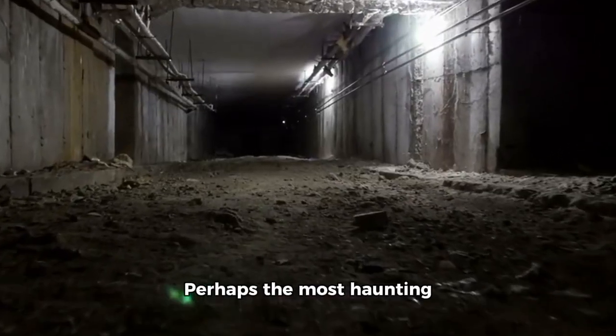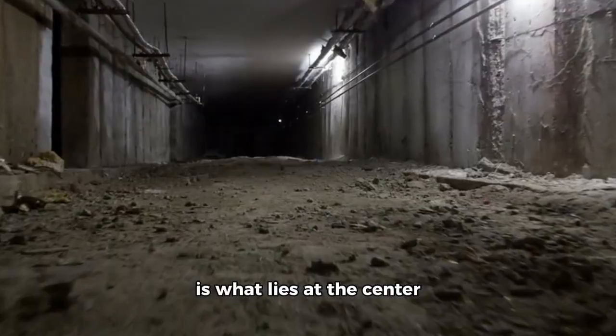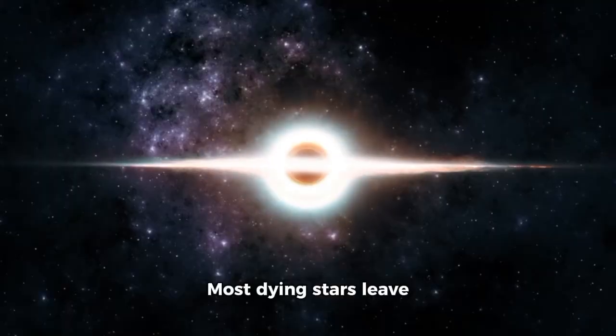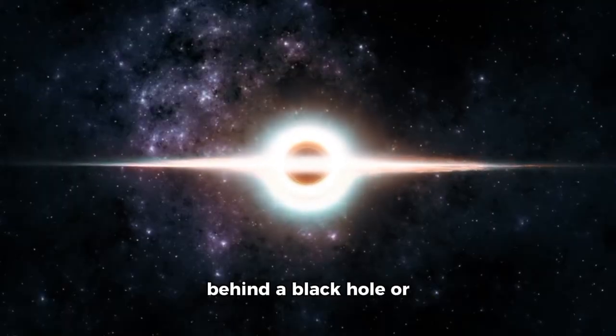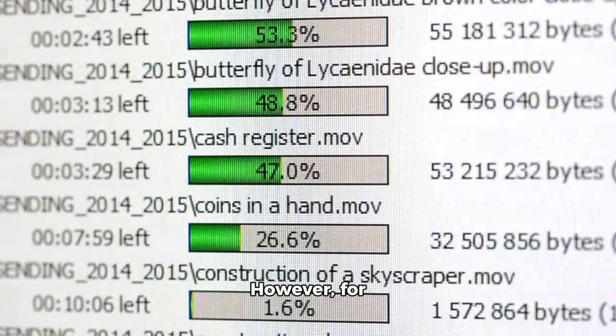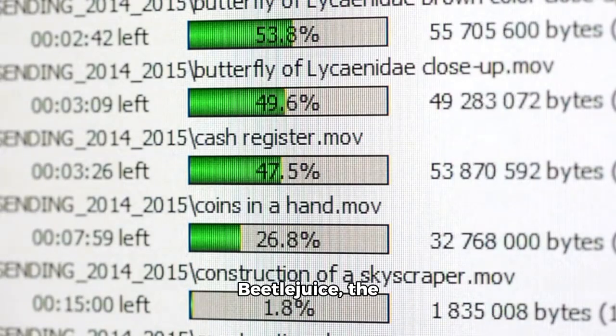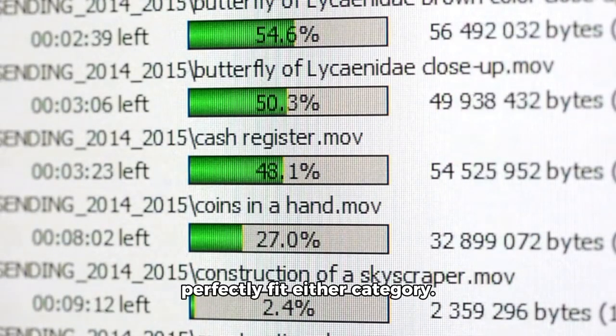Perhaps the most haunting part of Webb's discovery is what lies at the center of the collapse. Most dying stars leave behind a black hole or a neutron star. However, for Betelgeuse, the data do not perfectly fit either category.